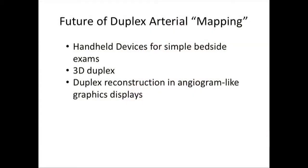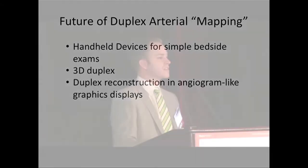I believe there's a large future for duplex ultrasound mapping — handheld devices at the bedside for identifying the presence or absence of arterial disease. Arterial disease should be diagnosed much earlier than when the ABI becomes abnormal. With a duplex scan you can look at the carotid, the femoral artery, and listen to the heart — these devices now weigh as much as a stethoscope. 3D duplex is allowing arterial mapping much more easily from a technical standpoint, and reconstruction allowing an angiographic-type visual presentation is the next step.